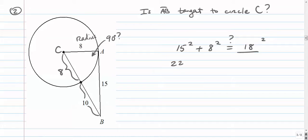So we're going to go 15² is 225 plus 64. Does that equal 18²? And that's 324. I can tell right away it doesn't work. 225 and 64, that's 289. That's not equal to 324. So again, this answer would be no.